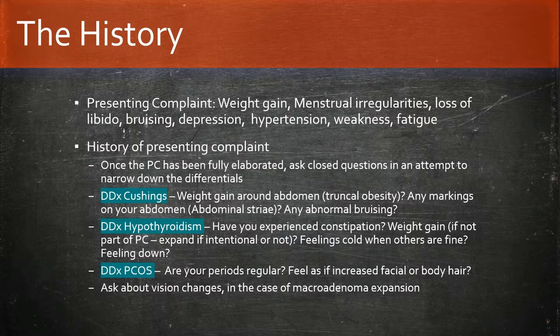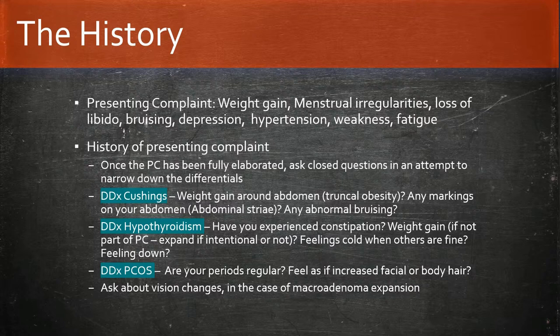Hypothyroidism is another differential — ask the patient if they have been constipated despite normal diet, if they feel colder than normal, and about any skin or hair changes. PCOS is another important differential — questions include whether periods are regular and whether there is increased body hair.